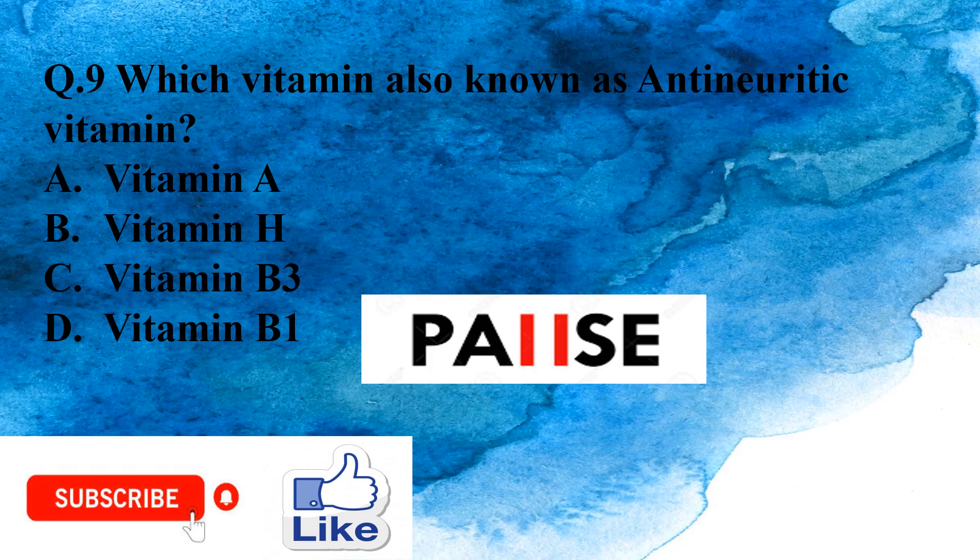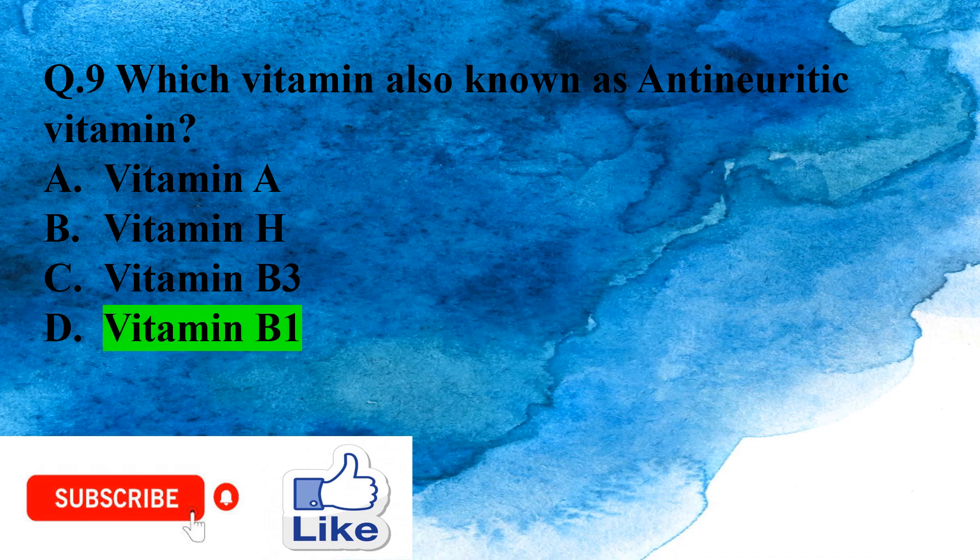Question 9: Which vitamin is also known as the anti-neuritic vitamin? Option A: Vitamin A, Option B: Vitamin H, Option C: Vitamin B3, Option D: Vitamin B1. The right answer is Option D, Vitamin B1.